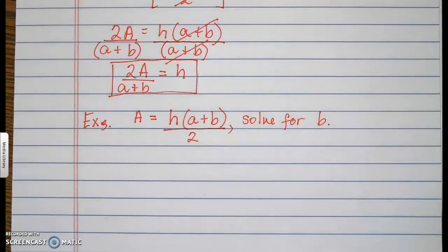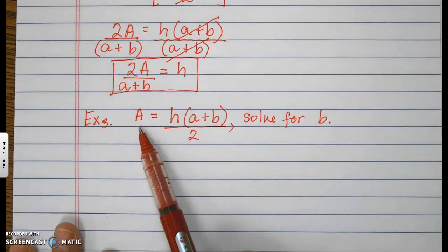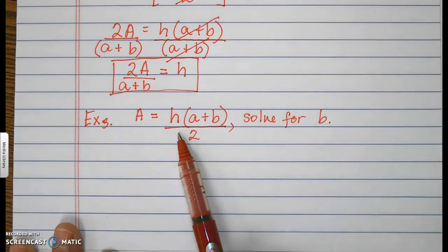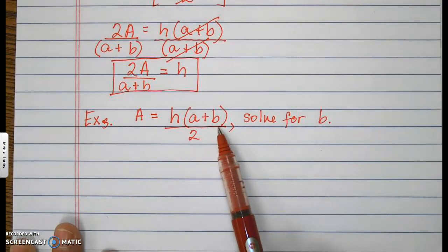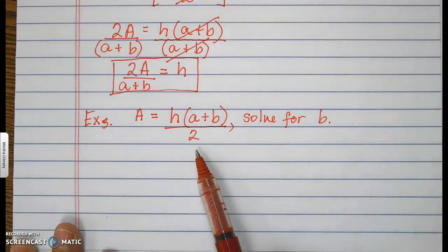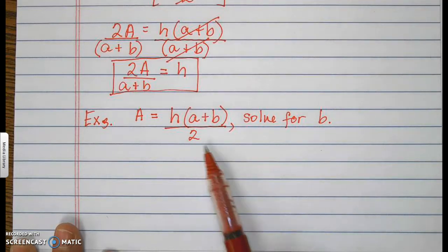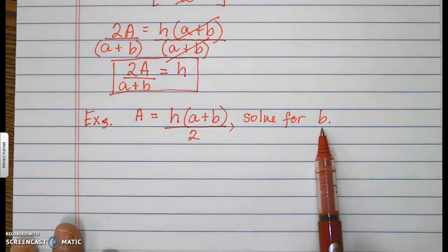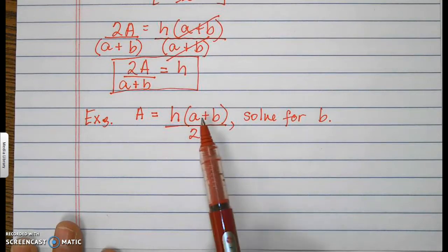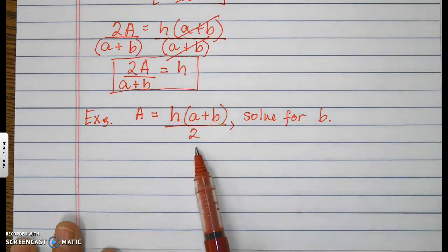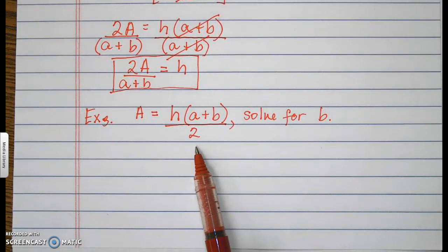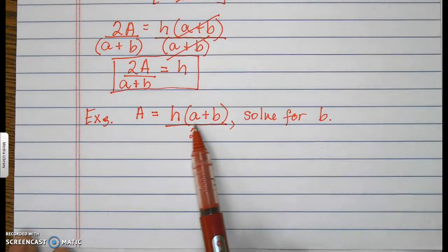Example number 3 uses the same equation: A equals h times parentheses a plus b, all over 2. But this time, solve for b. We need to remove h, a, and 2. The easiest to remove is the one farthest from b, which is the 2.